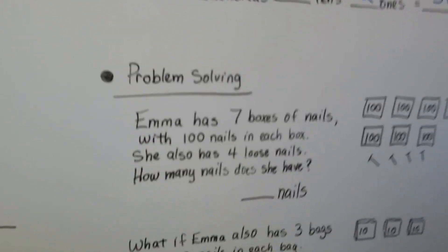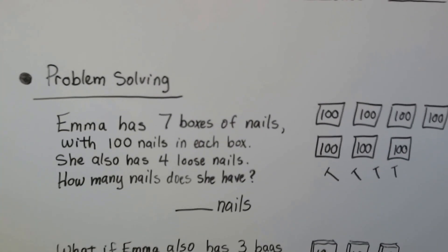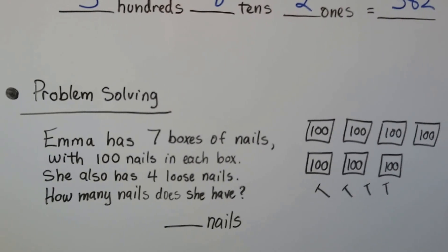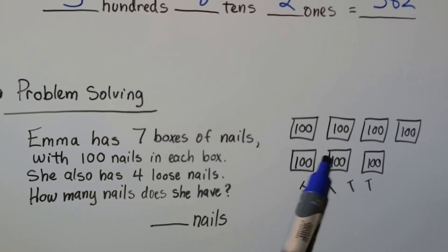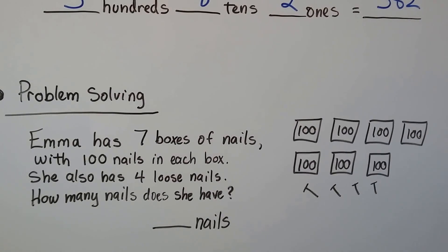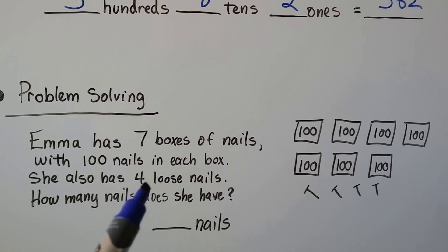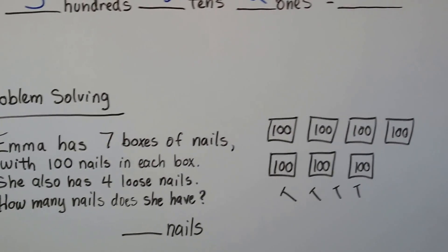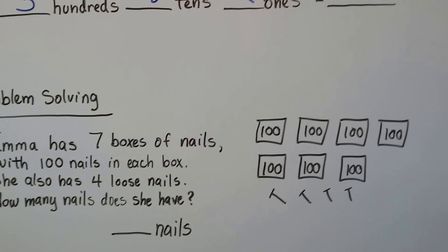Let's try some problem solving. Emma has seven boxes of nails with a hundred nails in each box. So I drew squares and put 100 on it to show that those are seven boxes with 100 nails in them. She also has four loose nails. So how many nails does she have? Well, drawing this picture can help us.